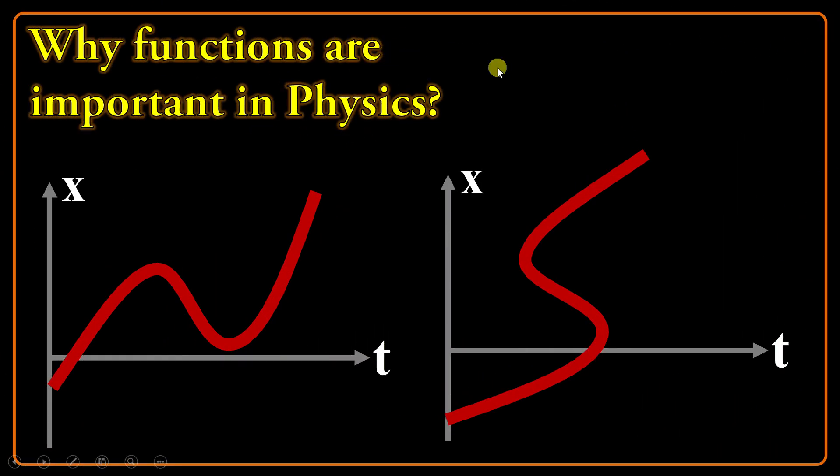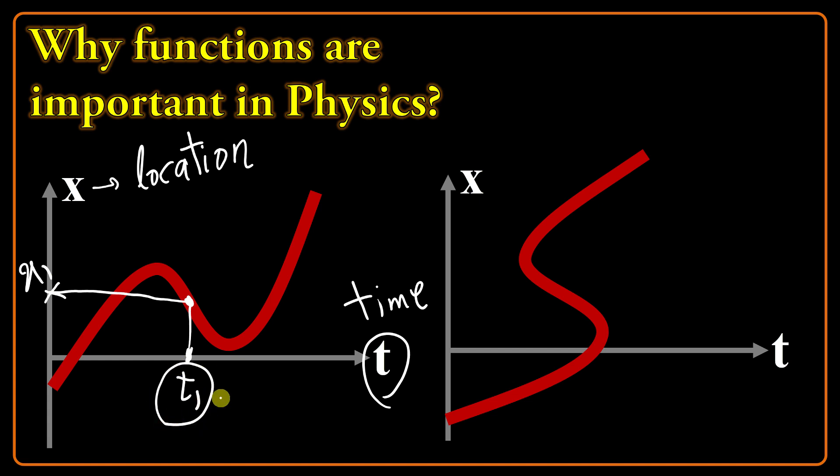Why functions are important in physics? Look at the left side of this slide. You see an x graph. x is location of the object, the position of the object, and t is time. And it's a function. What does it mean? For a certain time like t1, a certain moment, you will get just only one output like this x1. This is the location of the object, and it's logical because for a certain moment I can't have more than one location for an object.